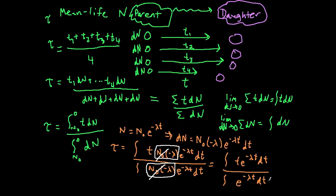Now for the limits: previously we went from n of zero to zero, which in terms of time means from t equals zero to t equals infinity. We don't know a specific finite time when every atom will have decayed, but if we let time go to infinity, then eventually all of them will have decayed. So both integrals run from zero to infinity.